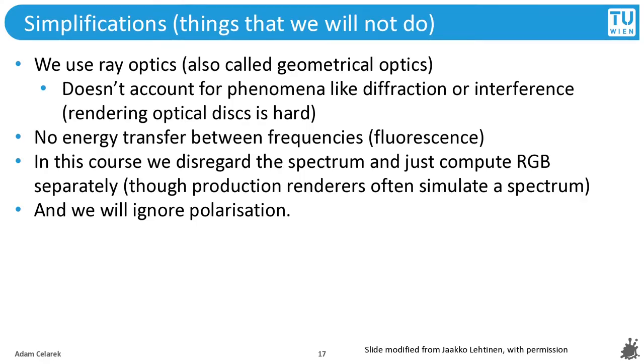You guessed probably right, those are the simplifications, things that we will not compute. We use ray optics, also called geometrical optics, so we don't account for phenomena like diffraction or interference. Rendering an optical disc is pretty hard. We also have no energy transfer between frequencies, so no fluorescence in this course. We will disregard the spectrum and just compute RGB, though production renderers often simulate spectrum. And finally, we will ignore polarization.